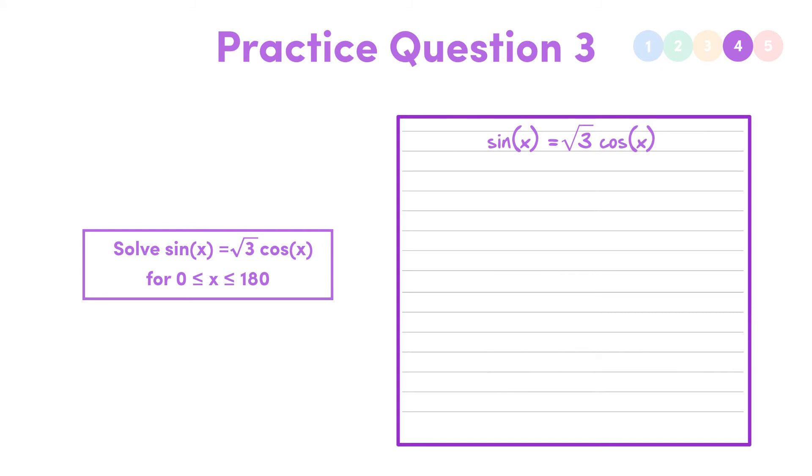So what do we do? Well, we introduce a very sneaky trick, and that's to divide both sides by cos x. It seems kind of random, I know, but what do we get? Sine x over cos x becomes tan x, and cos x over cos x becomes 1. So that means we're left with tan x equaling root 3.